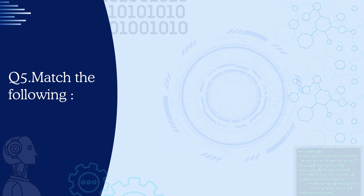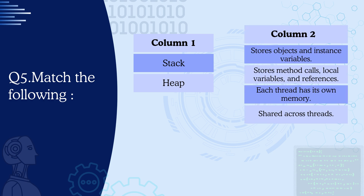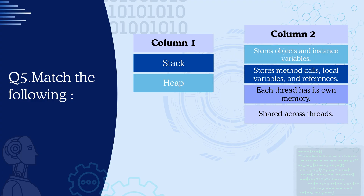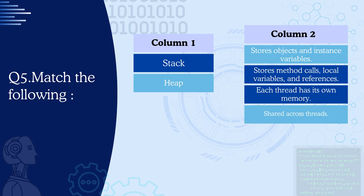Question 5: Match the following — stack memory and heap memory with: stores objects and instance variables; stores method calls, local variables and references; each thread has its own memory; or shared across different threads. The correct answer is: stack stores method calls, local variables and references, whereas heap stores objects and instance variables. In the case of stack, each thread has its own memory, but in the case of heap, it's shared across threads.